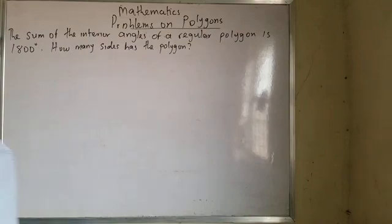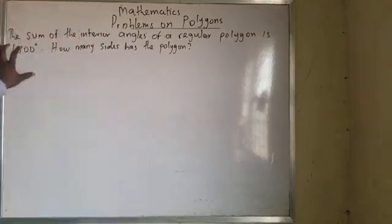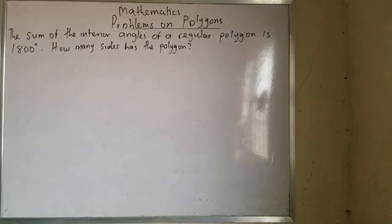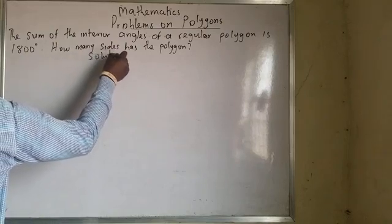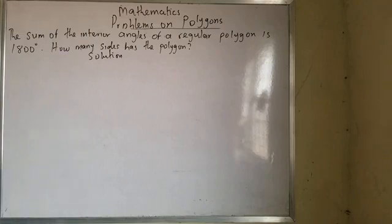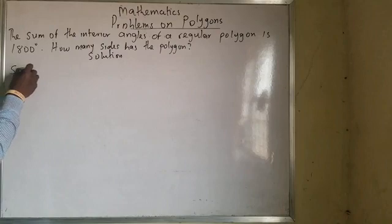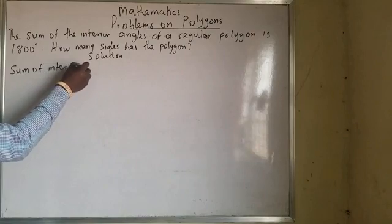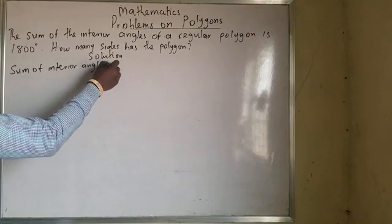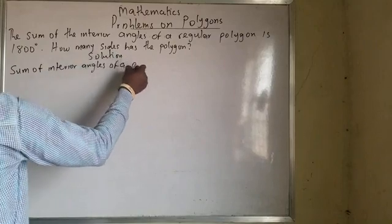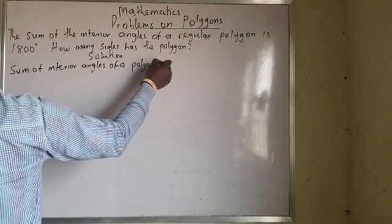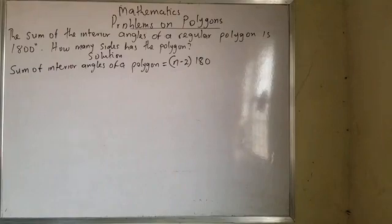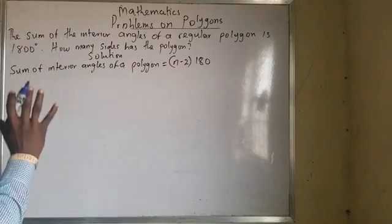The sum of the interior angles of a regular polygon is 1800 degrees. How many sides has the polygon? Now, the sum of interior angles of a polygon equals (n minus 2) times 180. We have done a video on polygons — make sure you watch that before this. I'm just showing how to solve problems here.